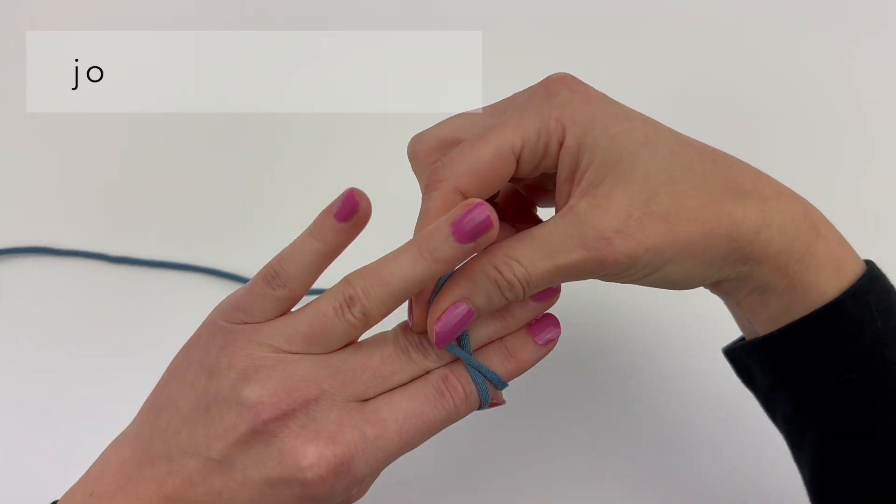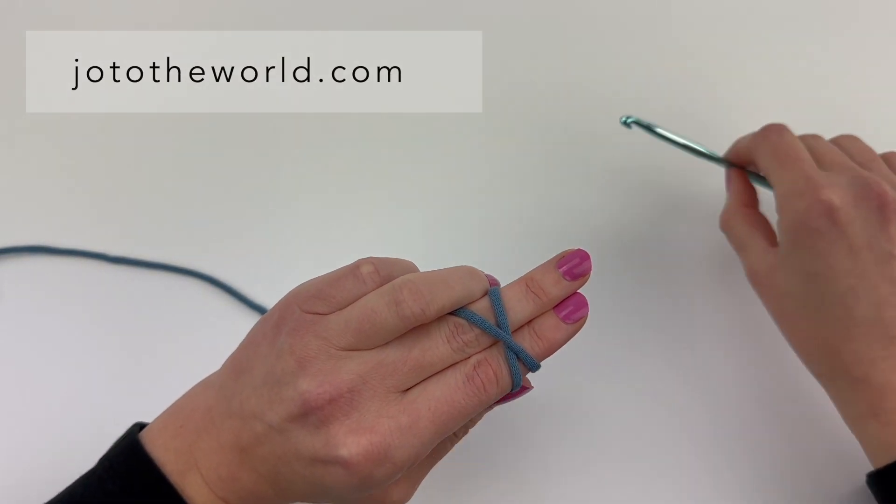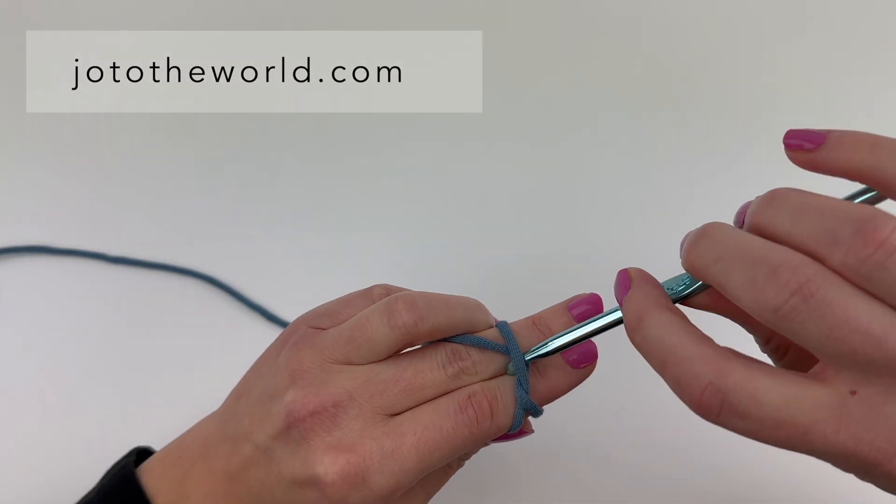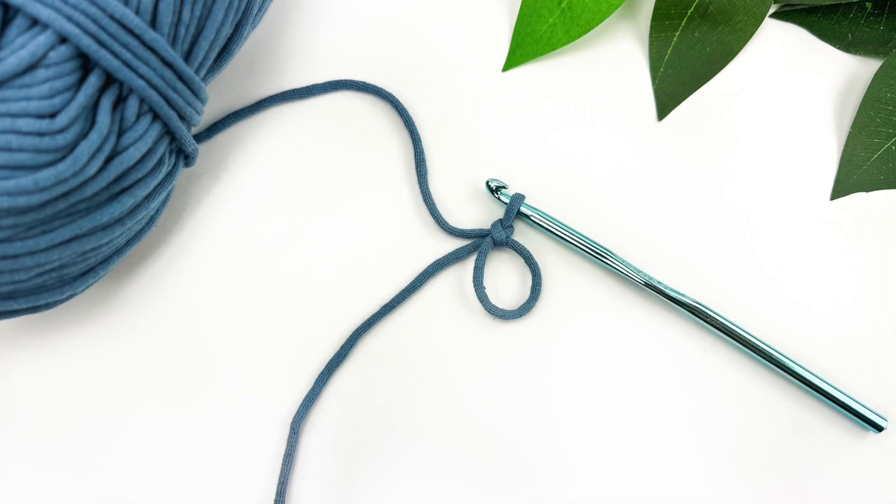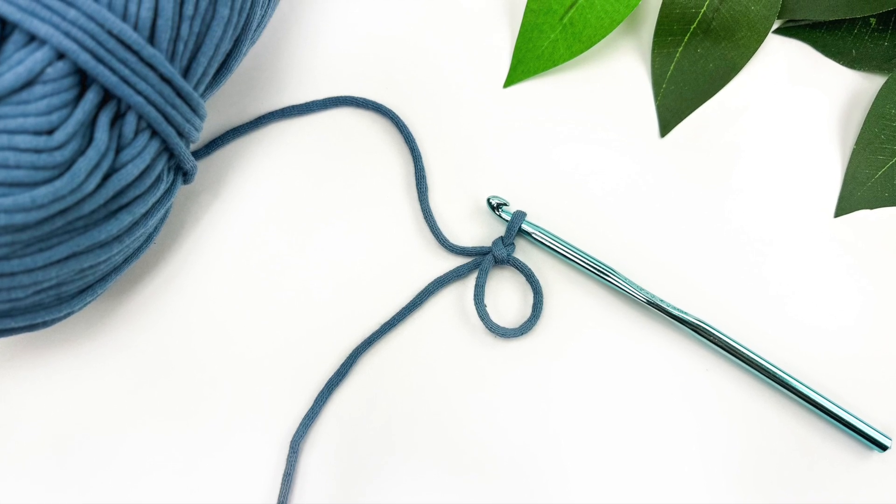Hello from Halifax. This is Jo with Jo to the World Creations and today we're going to learn how to make a magic circle in crochet, which is also known as a magic ring.